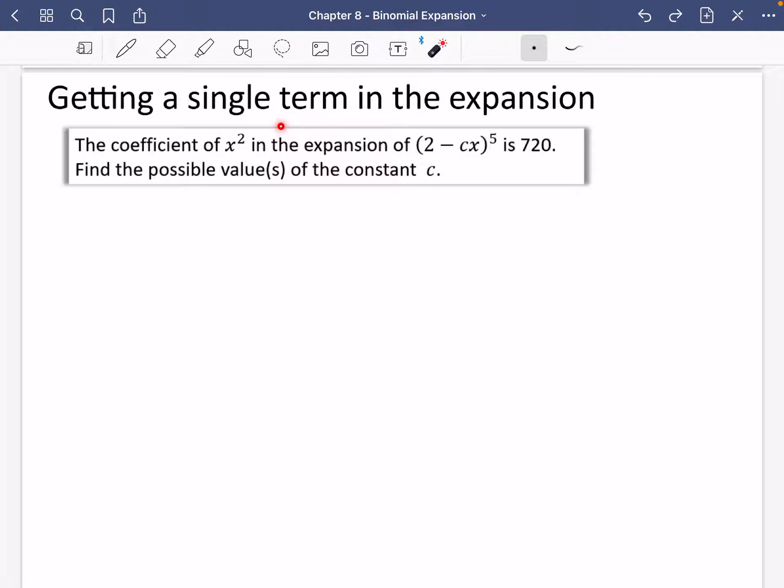Sometimes you may not want to do the entire expansion. You may just want to find a single term in the binomial expansion. And they love these kinds of questions, particularly where there is an unknown value within the expansion. So it says here that the coefficient of x squared in the expansion of this thing here is 720. Find the possible value or values of the constant c.